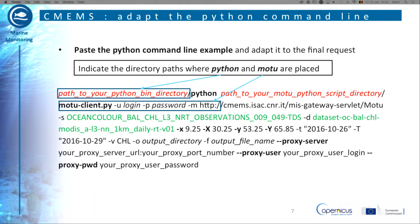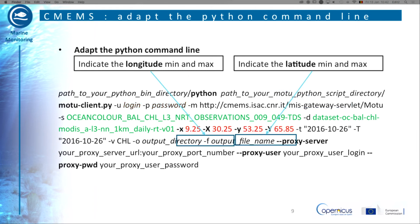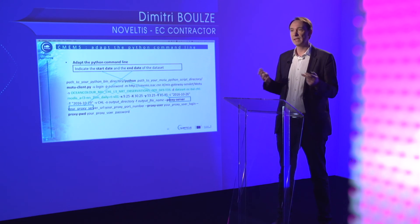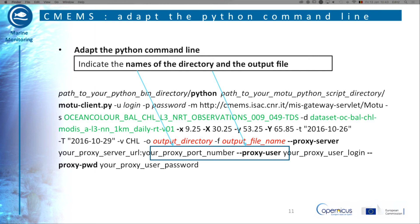The first necessary changes are the update of the directory paths for your Python and Motu. Then you have to indicate your CMEMS login and password in the command line. The name of the product as well as the name of the selected datasets are indicated here in green. According to your needs, you can modify the geographical extent of the download — change the longitude and latitude as min and max as shown here. You can also modify the start date and the end date of the extraction. Finally, give the name of the output file and the name of the directory where the extraction will be written.